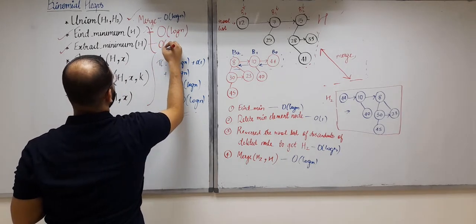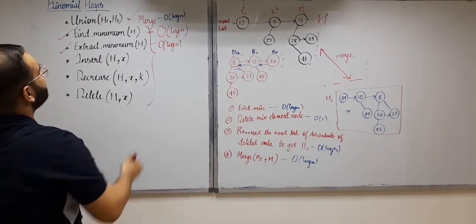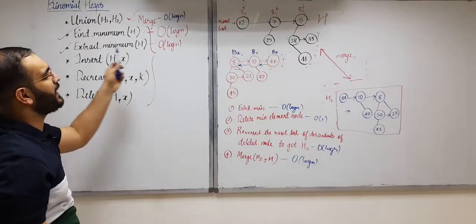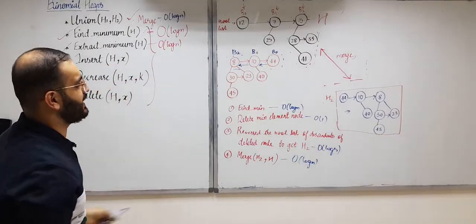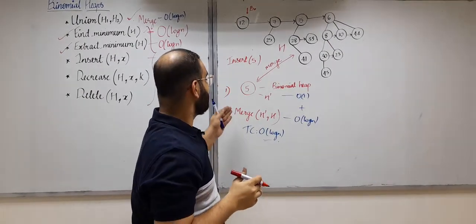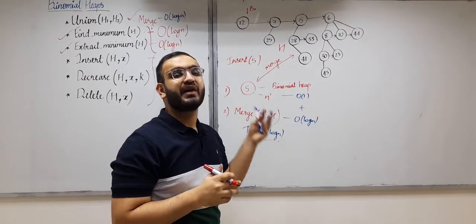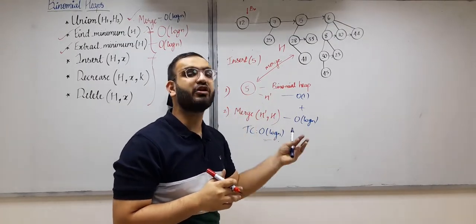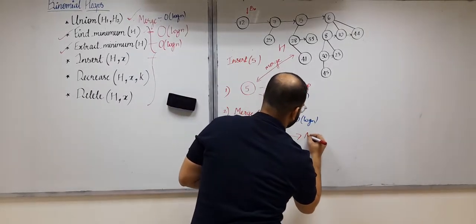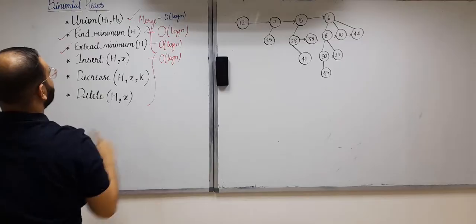The third operation is inserting an element x into a binomial heap H. The amortized time complexity for a single insert, when considering a series of n insertions, comes out to be O(1).